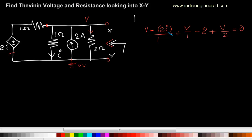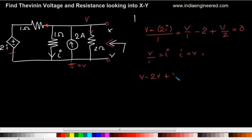Now we have one equation and two unknowns. The other unknown here is I. We can see that I is nothing but the current through this 1 ohm resistor, which is V by 1. That means I is nothing but V itself. So from this we can reduce the equation: V minus 2V plus V minus 2I plus V equals zero, substituting I = V.